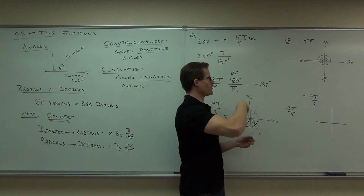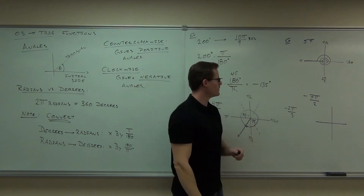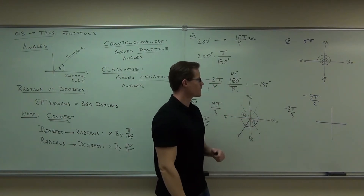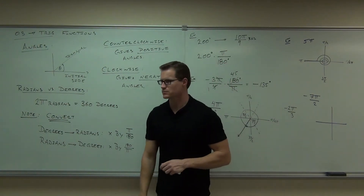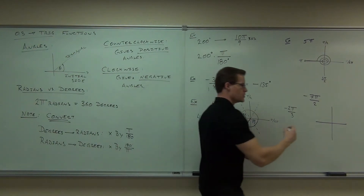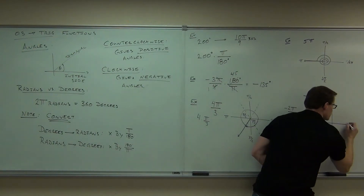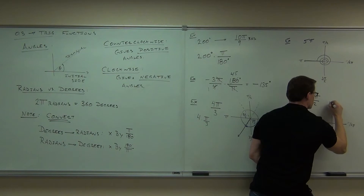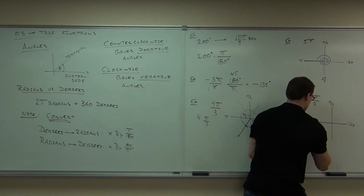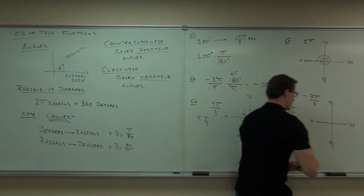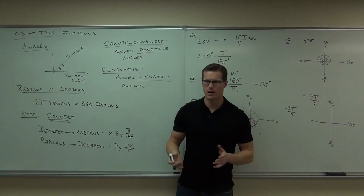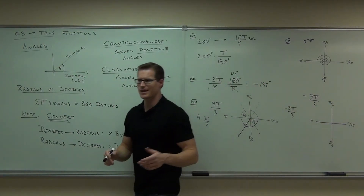It looks like a spring all wound up. Do the negative 7π/2 on your own. Of course, you know this is 0 and 2π. It's already broken up into π/2's for you. That's kind of nice.